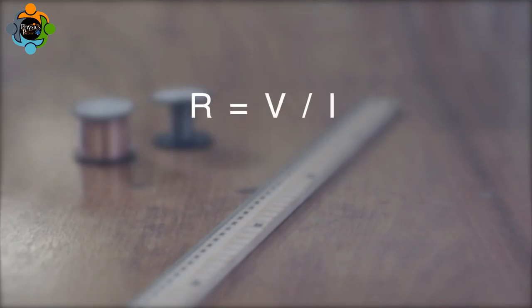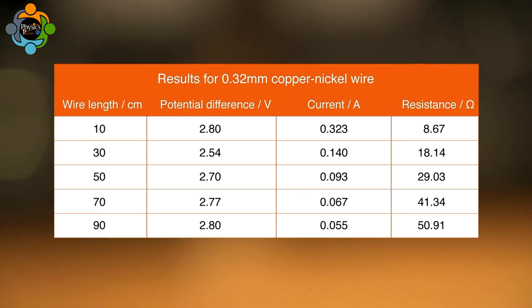The resistance of each length of wire can be calculated using the equation resistance R equals the potential difference V divided by the current I. The results table is completed using the calculated resistance for each length of wire.